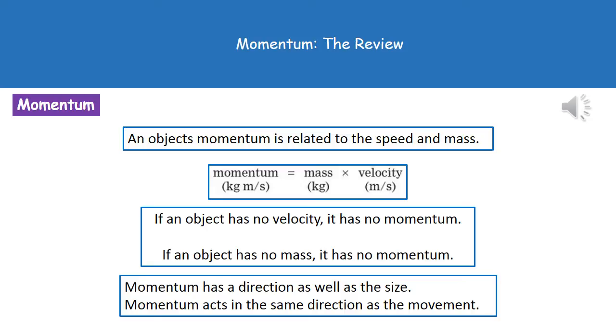First thing to note then, is because we're timesing the mass by the velocity, if either the mass or velocity is zero - so if the object has no velocity, so it's not moving, or it's got no mass - then it would have no momentum.